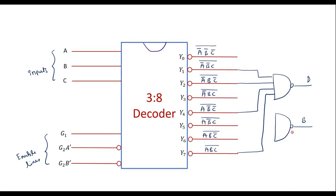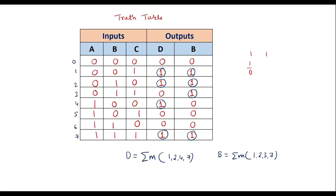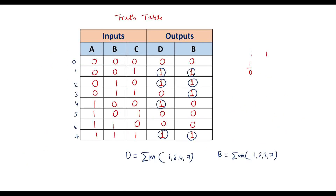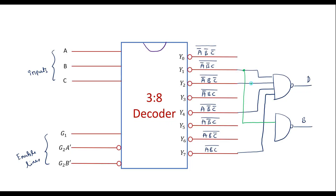Now let me connect the output of the 3-to-8 decoder to get the borrow output. The minterms are 1, 2, 3, and 7, so connect lines 1, 2, 3, and 7 to the borrow NAND gate. This is the borrow output. Thus, we have implemented a full subtractor using a decoder. The advantage of using a decoder is that we can reduce the number of gates required to implement any function. Thank you for watching.